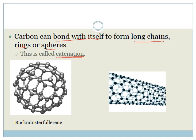Carbon does not only bond with most other elements on the periodic table. It can also bond with itself to form long chains, rings and spheres. And this is called catenation. And guys, you really need to know this definition of catenation. That is the fact that carbon can bond with itself because they like to ask it.